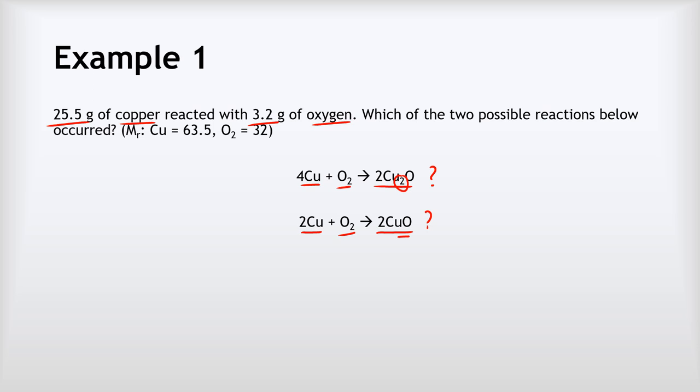We're going to use maths similar to the ratio maths we did for working out an empirical formula, because ultimately we're trying to find out: is our copper and oxygen in a four to one ratio — in which case it would be the first equation — or is it in a two to one ratio, in which case it'll be the second equation?